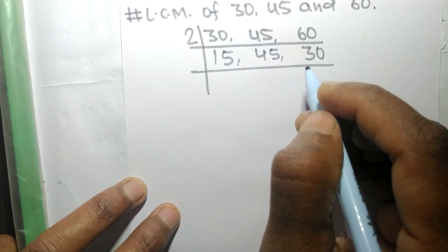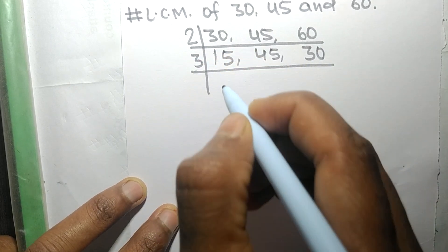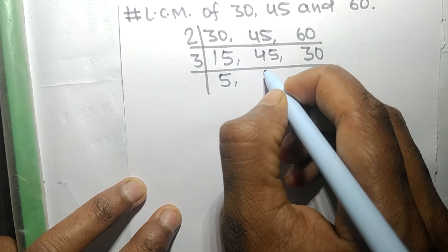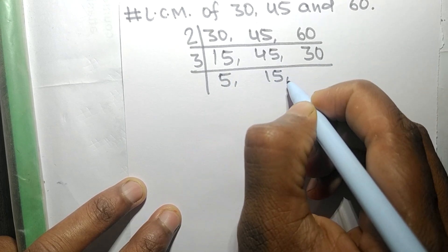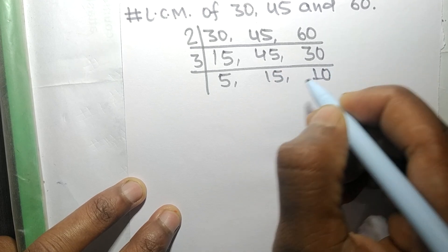Now these all numbers are exactly divisible by 3. So 3 times 5 equals 15, 3 times 15 equals 45, 3 times 10 equals 30.